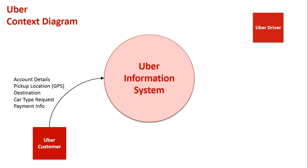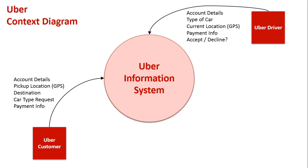On the other side, we have our Uber driver, who also needs to enter data into the system. They have their own account details, they need to specify their type of car so they can be matched to requests, and their location is picked up by GPS. We also require their payment info so they can be paid, and they have the ability to accept or decline requests — they might be off shift or choosing from a variety of jobs coming through.